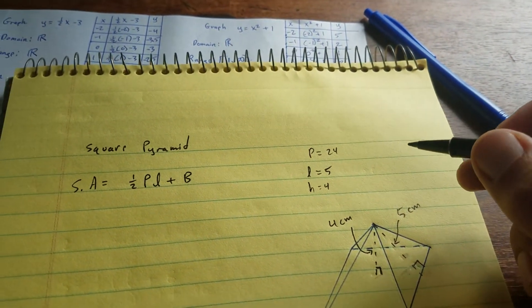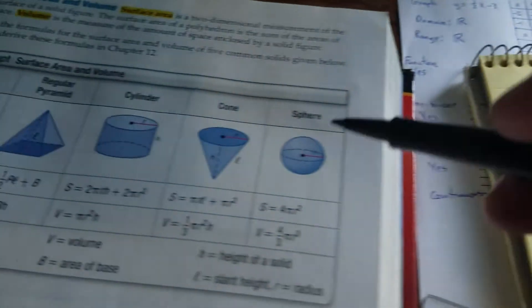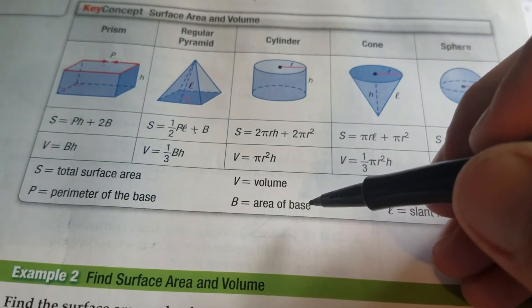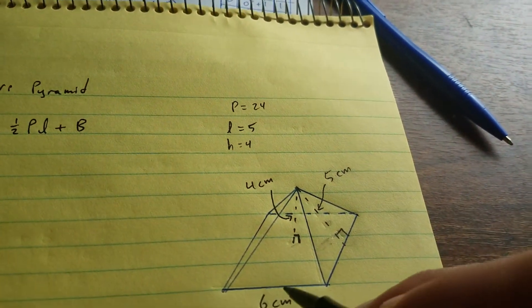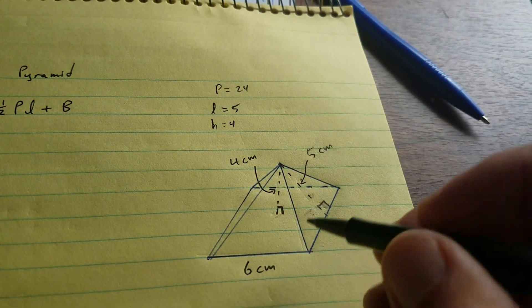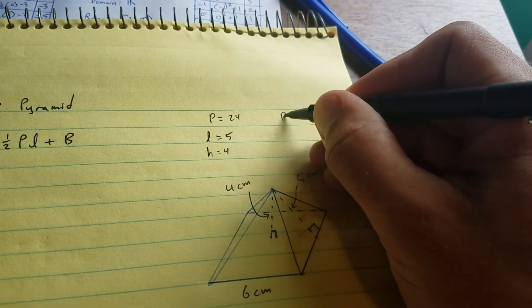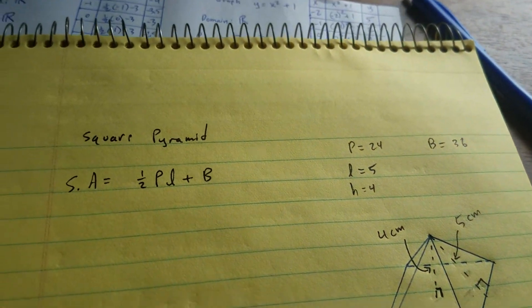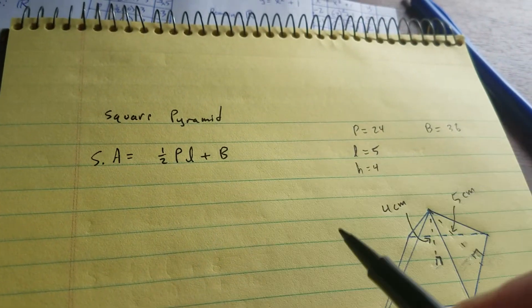And B—what is B? Remember that B is the area of the base. Capital B means area of the base. Well, if each side of the base is 6, capital B is going to be 36. The area of the base is 36. So now we can plug these in and solve for surface area.